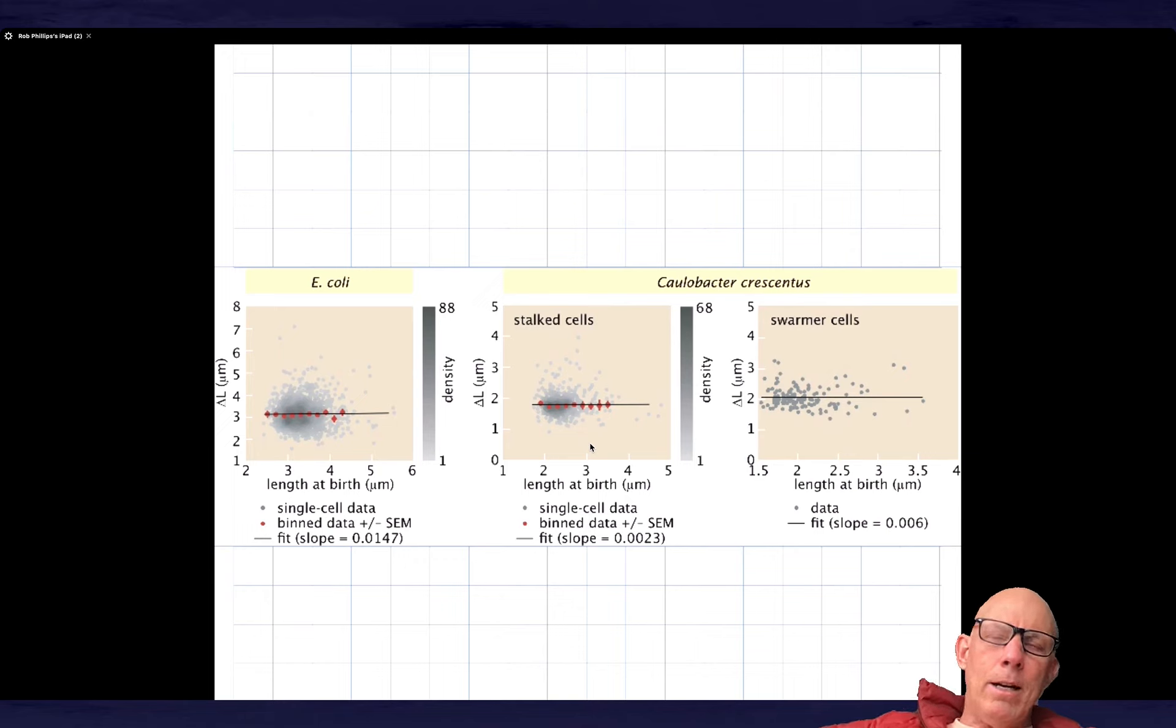Now I wanted to focus on this very interesting plot. What the Jacobs-Wagner group did in their Cell paper was they plotted the change in length on the y-axis and the length at birth on the x-axis. In this adder model, the adder does not care about the volume at birth. It basically says I'm going to add this quantity delta regardless of what the size was at birth. Their measurements, when you average over them, show this trend in all three cases, which is basically an indifference to the length at birth. The adder fundamental assumption seems to be obeyed in these experiments.